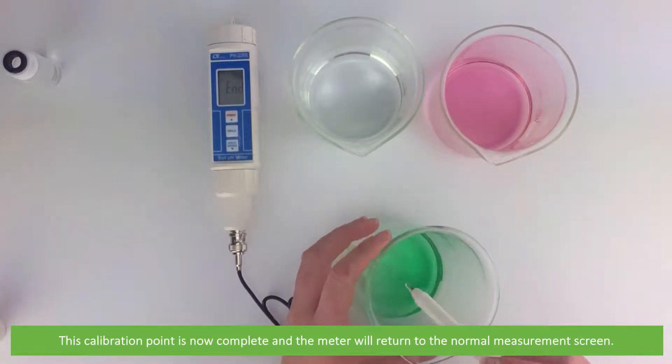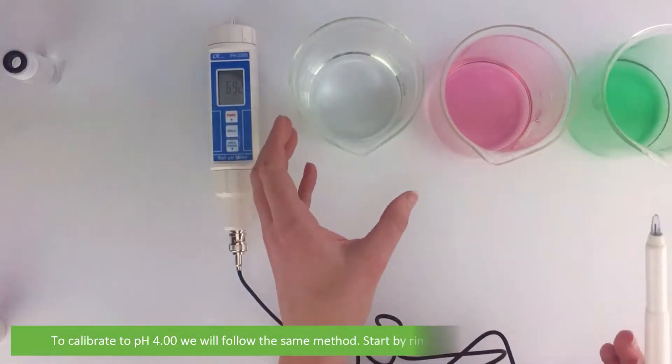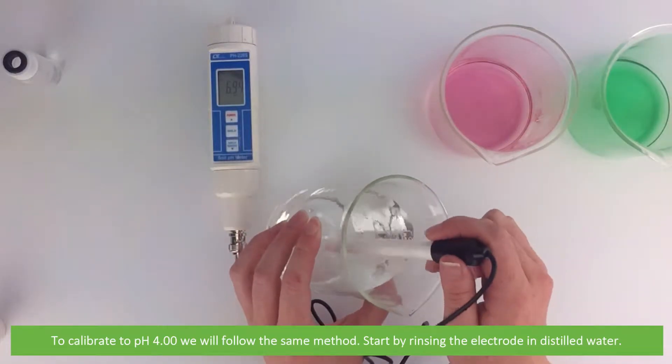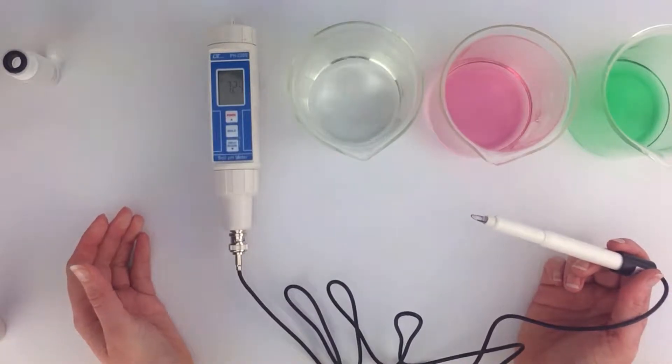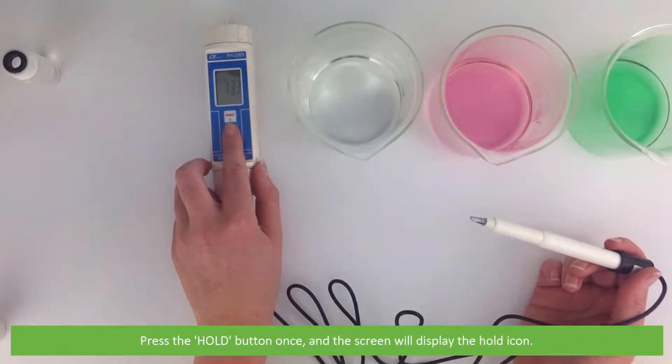This calibration point is now complete and the meter will return to the normal measurement screen. To calibrate the pH 4 we will follow the exact same method. Start by rinsing the electrode in distilled water, press the hold button once and the screen will display the hold icon.